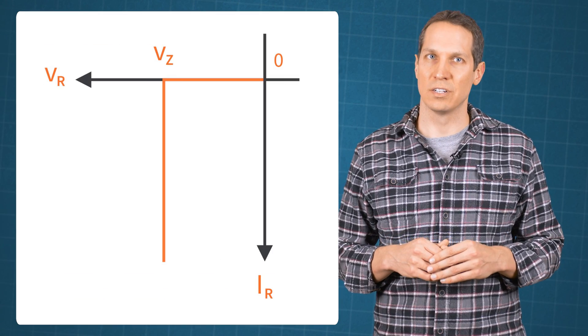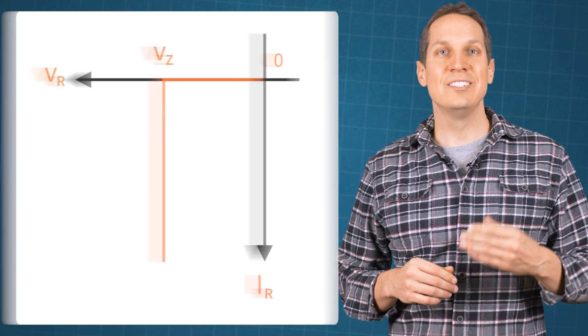This is the ideal characteristic curve of a Zener diode. However, in reality, there exists a Zener impedance and the actual voltage curve is not perfectly vertical. There is a change in the Zener current that produces a small change in Zener voltage.